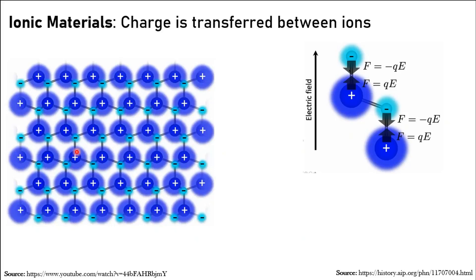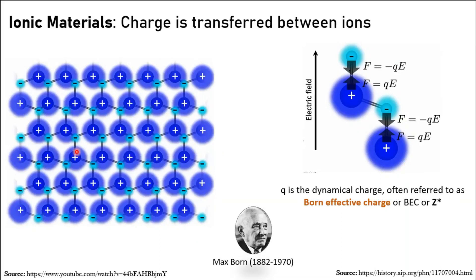The positive and negative charges experience forces in opposite directions. Since this force is applied, the charge distribution will be displaced or distorted — so the charges are not static. After distortion, there will be some differences due to this polarization or displacement. These charges are thus not static but dynamical charges, and they are called the Born effective charges, named after Max Born.